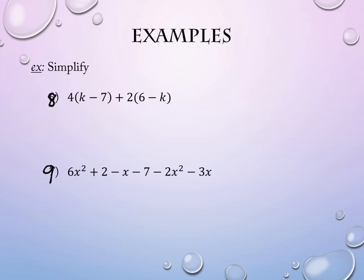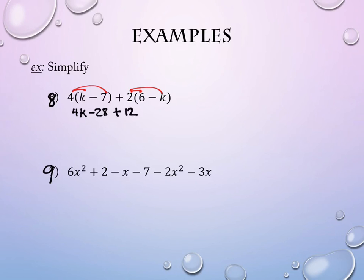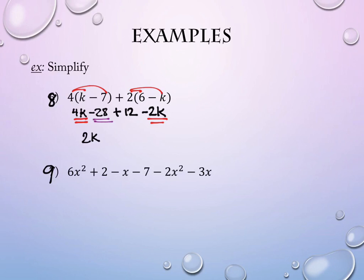Number eight has more steps — two sets of distributions. We distribute the four through first: 4k minus 28. Then distribute the positive two through the second set: positive 12 and negative 2k. Be careful with the sign in between — if it had been negative, it would affect all values. Now combine like terms: 4k and negative 2k gives 2k; negative 28 and positive 12 gives negative 16. So the result is 2k minus 16.